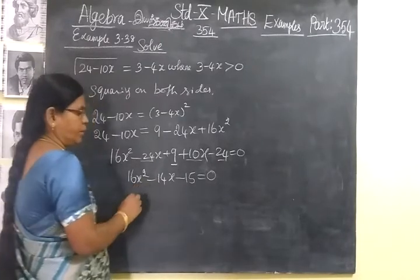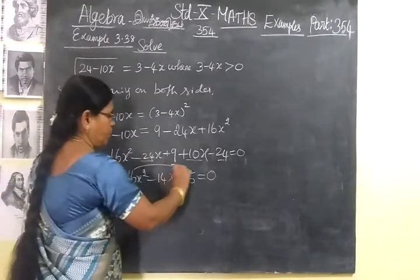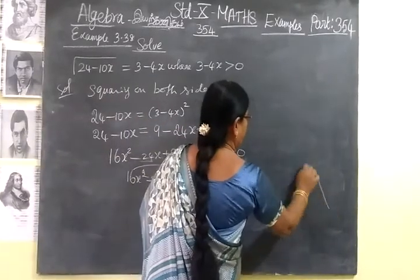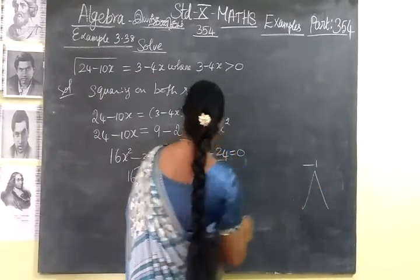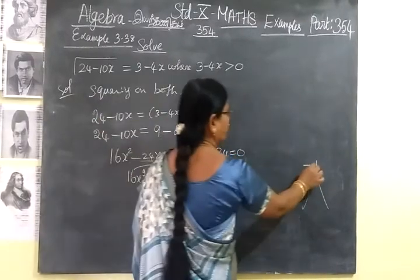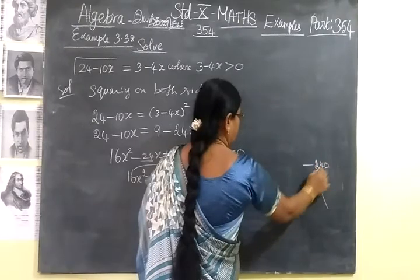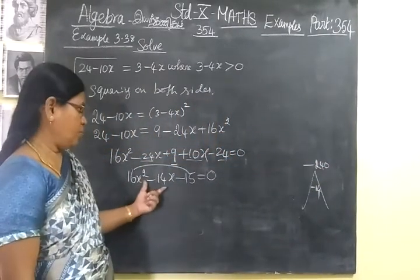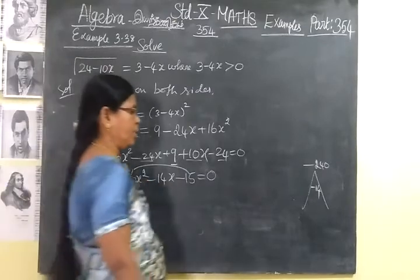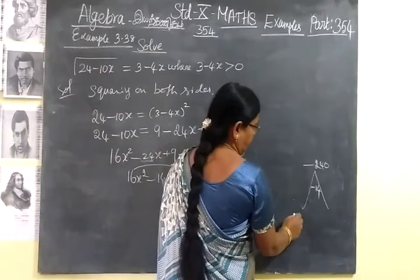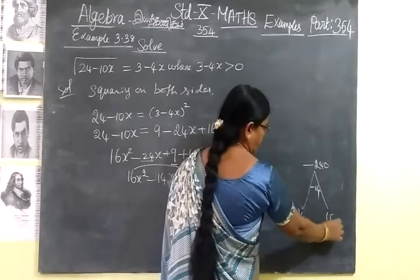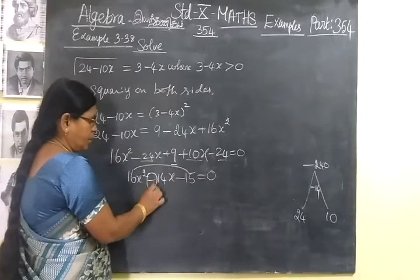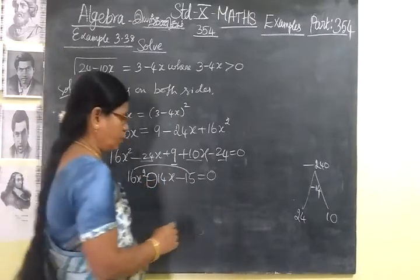Now we have to solve the quadratic equation. That means if we multiply, you should get 16×(-15) = -240. If we add or subtract, we should get -14. What is the medium term sign that you see? You put it for the greater number.